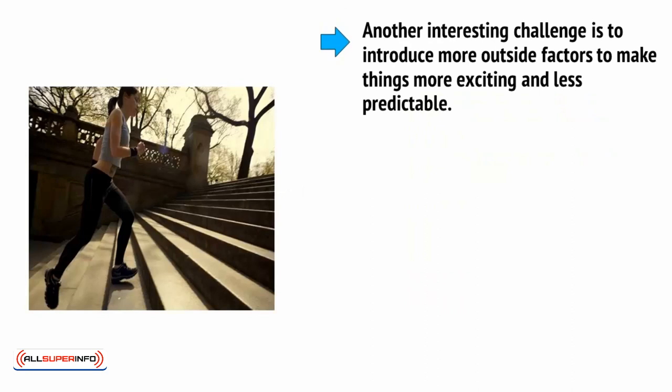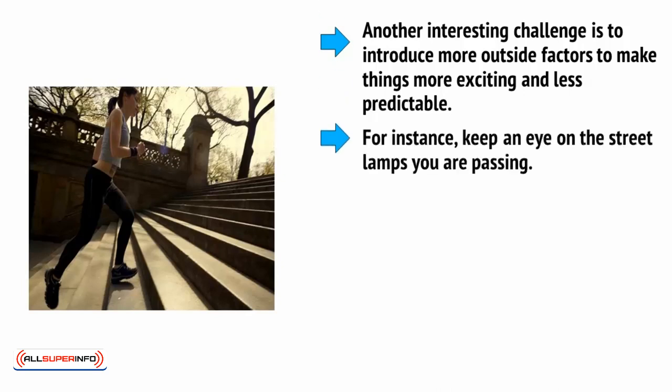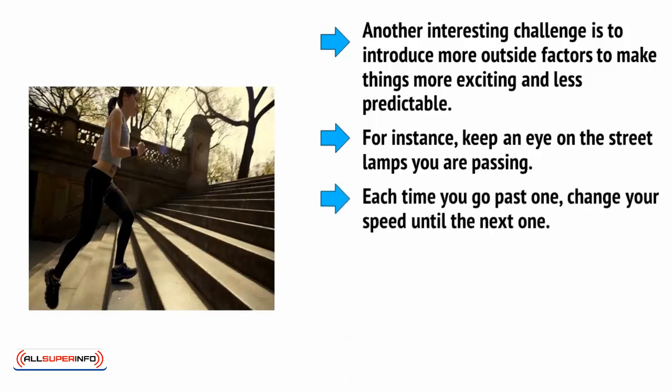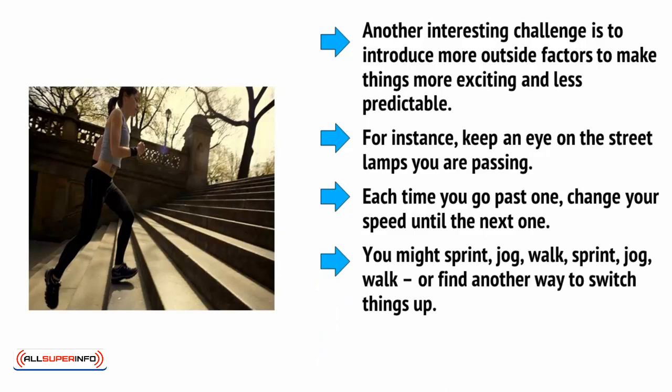Another interesting challenge is to introduce more outside factors to make things more exciting and less predictable. For instance, keep an eye on the street lamps that you're passing. Each time you go past one, change your speed until the next one. You might sprint, jog, walk, sprint, jog, walk, or find another way to switch things up.